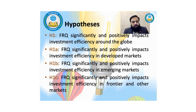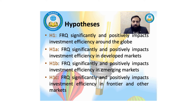This slide presents the hypotheses of the study. There is one main hypothesis subdivided into three categories. H1: financial reporting quality significantly and positively impacts investment efficiency around the globe. H1a: financial reporting quality significantly and positively impacts investment efficiency in developed markets. H1b: in emerging markets. H1c: in frontier and other markets.